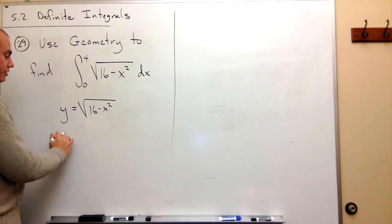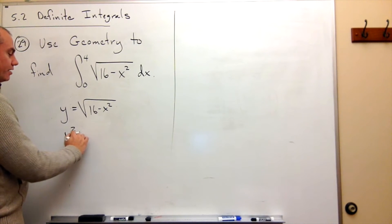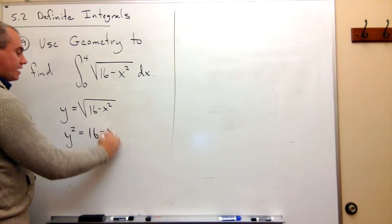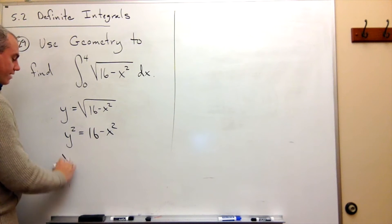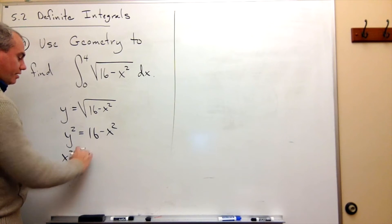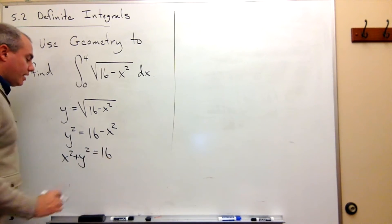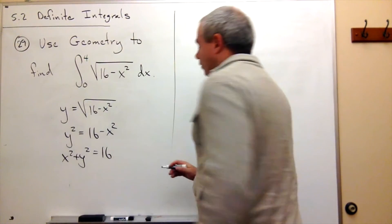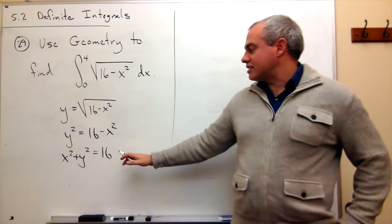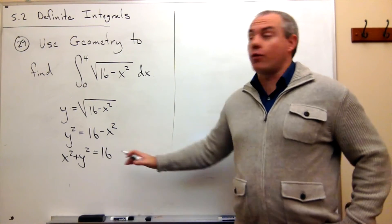And in case you can't just recognize it off the top of your head, if I squared both sides, I get that y squared is equal to 16 minus x squared. So x squared plus y squared is 16. And now we should recognize, oh, what we're dealing with here is something involving a circle of radius 4.